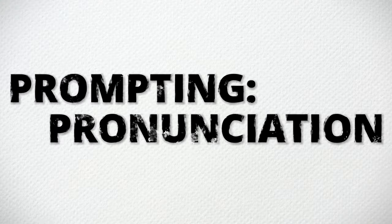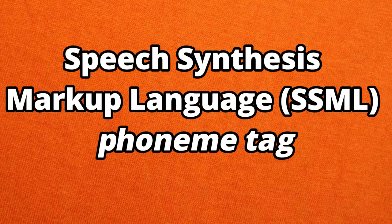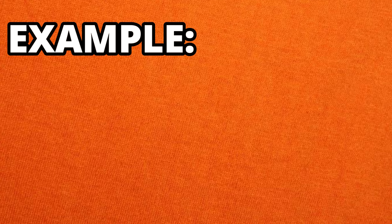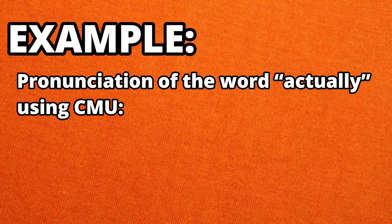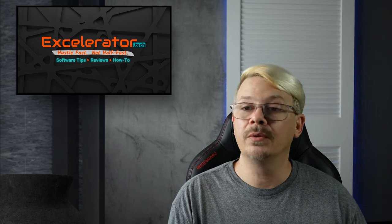For pronunciation, one option is programmatic syntax again. ElevenLabs English V1 and Turbo V2 support the Speech Synthesis Markup Language (SSML) phoneme tag with pronunciations defined using the International Phonetic Alphabet (IPA) and the CMU ARPABET. An example of specifying the pronunciation of the word 'actually' using IPA might look like one format, and using CMU might look like another. ElevenLabs thinks folks should know this exists, as there might be people out there who know how to take this and run with it.